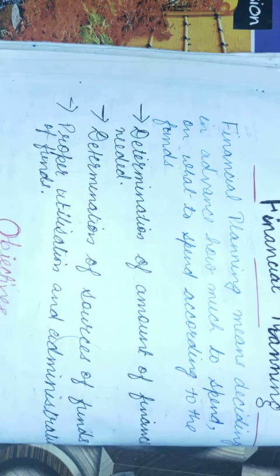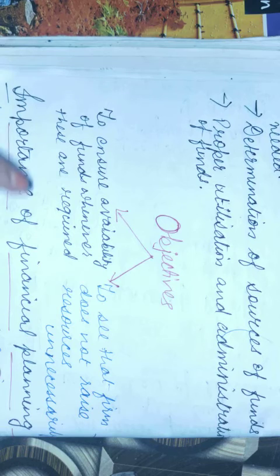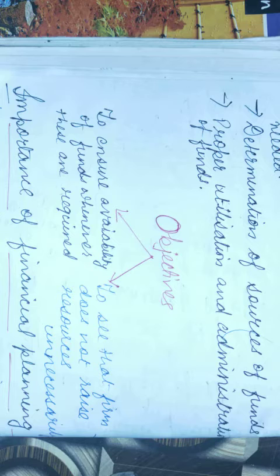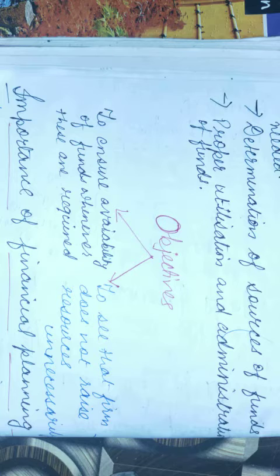Now we will discuss the two main objectives of financial planning. Financial planning mainly has two objectives. The first objective, to ensure availability of funds whenever there is a requirement.